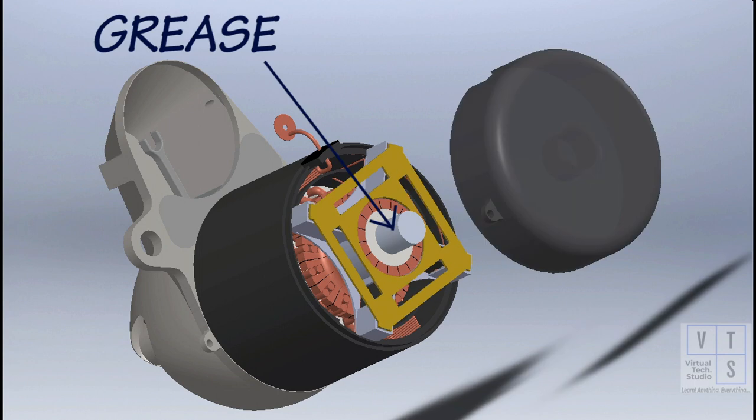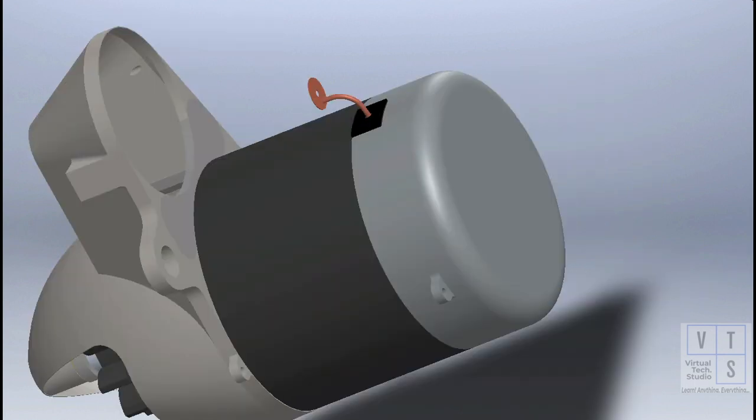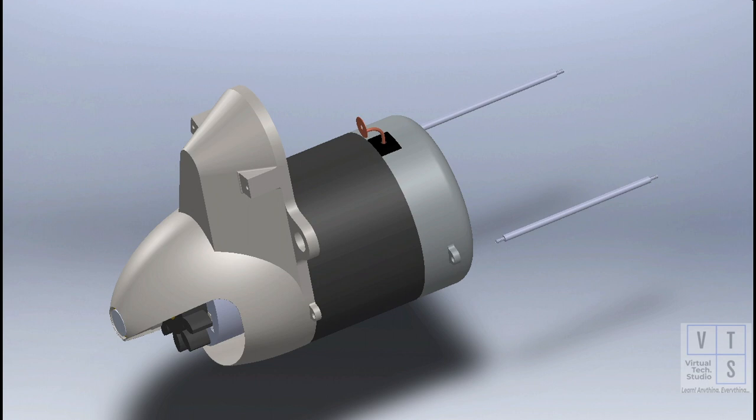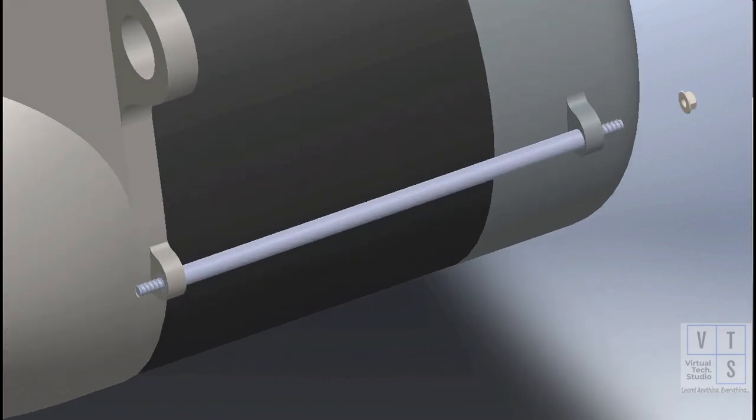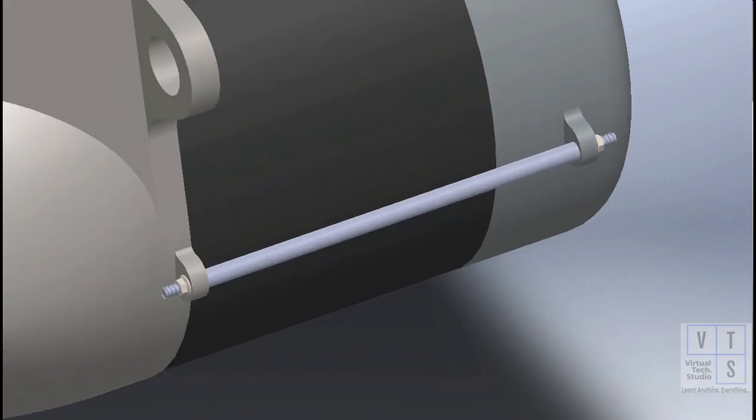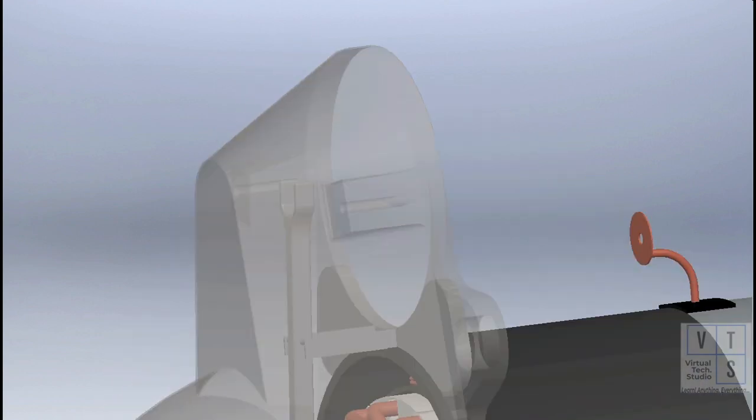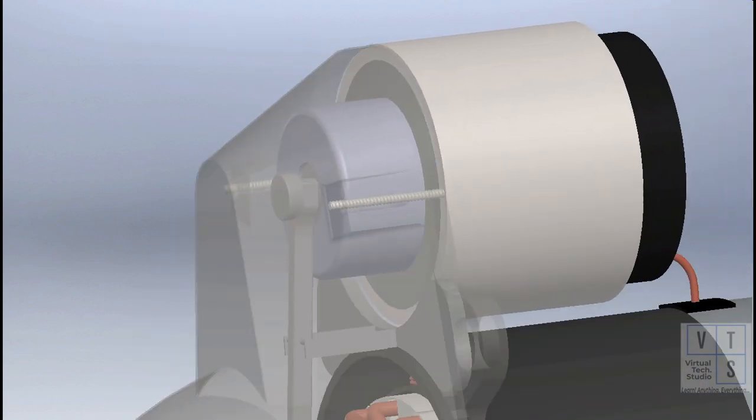Apply grease to rear housing brass bush. Apply grease to the plunger of magnetic switch before installing.